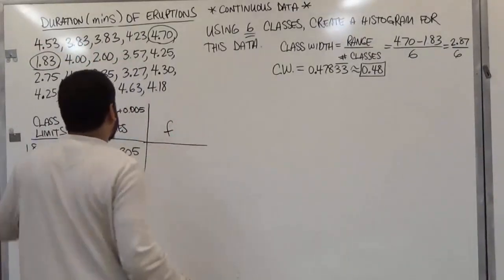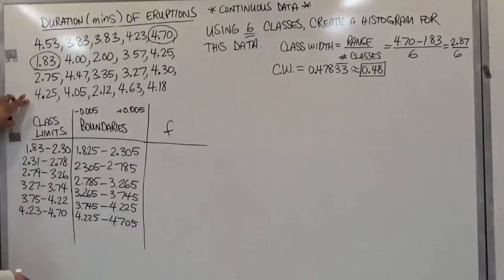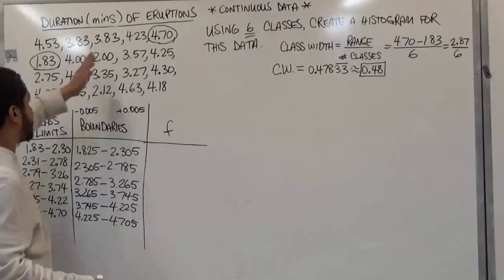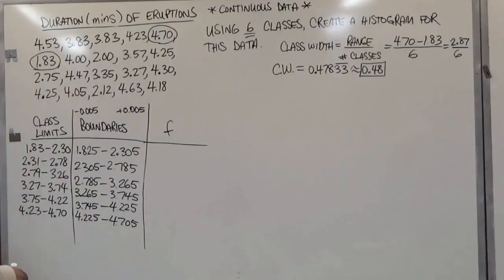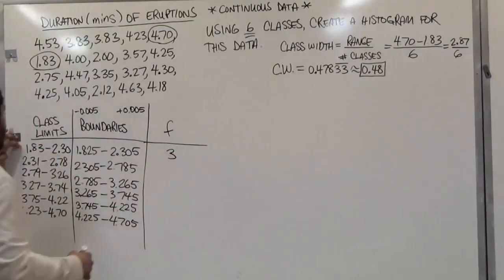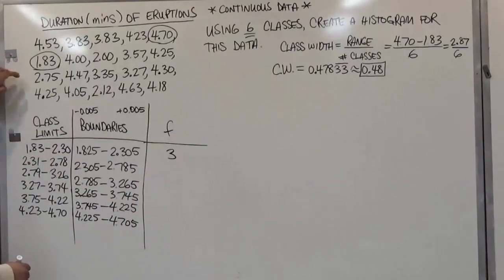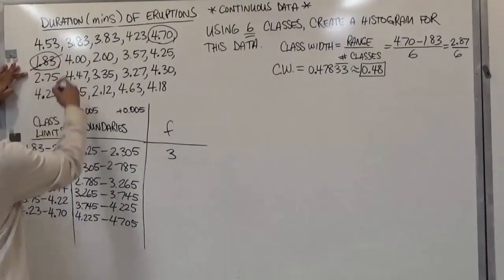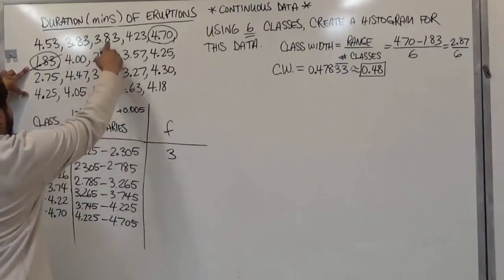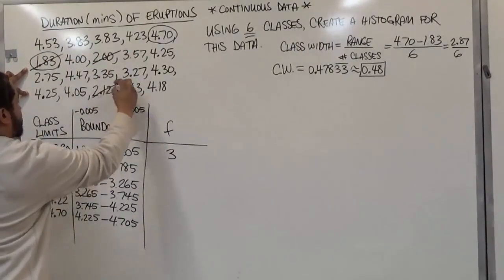Instead of counting across rows, it's more confusing when you see more numbers in your periphery. It's better when you see less going downward. So for the first class, we're going to have a frequency of 3. So we have 1.83 to 2.3. You would just go in here and you count them off. Like 1.83, that's 1. The second number that falls in this width is 2.00. And finally, 2.12.